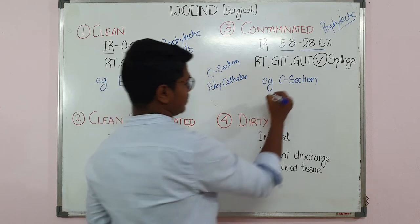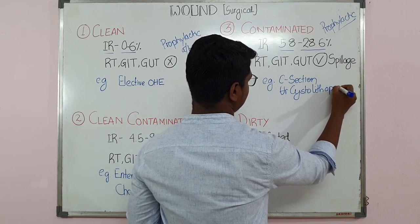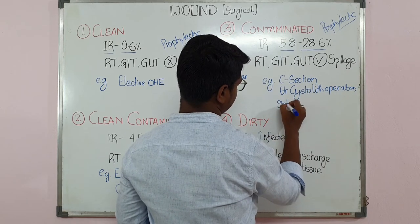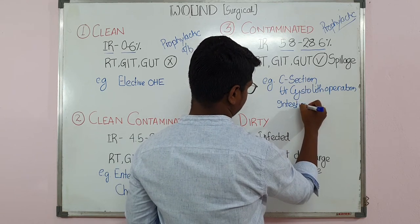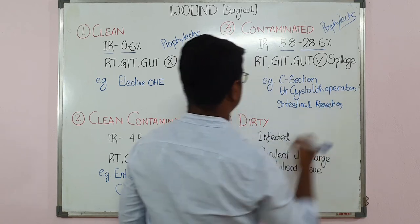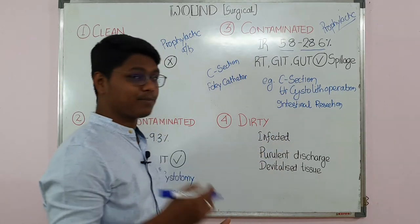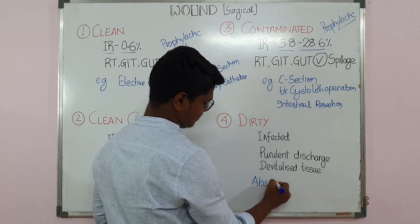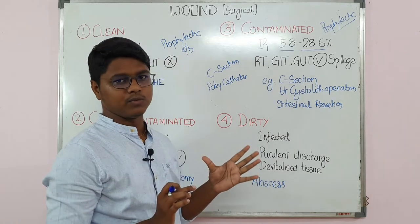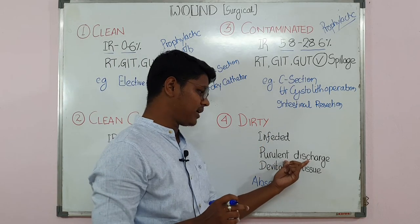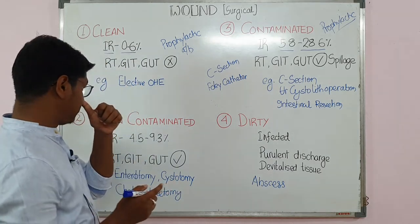Complications of enterotomy and cystotomy — the urolithiasis or cystolith operation — involve spillage of urine. If done perfectly it is clean contaminated, but if there is spillage it becomes contaminated. The last type is the dirty wound — it is already infected. The best example is opening an abscess. Once you open an abscess, the fluid itself will contaminate the wound. In case of a dirty wound you will find purulent discharge and devitalized tissue.